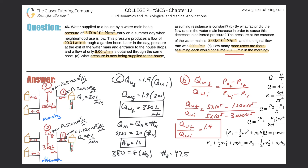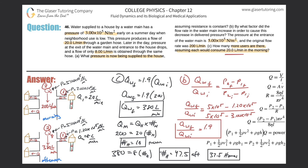So approximately 47.5 homes are using water in the afternoon compared to 10 in the morning. Subtracting, there are approximately 37.5 additional homes using the water in the afternoon. You can round to 38 or round down — the answer is somewhere around there.